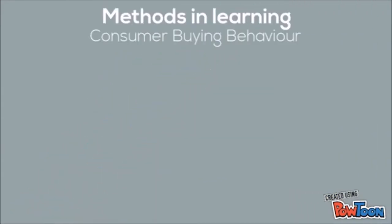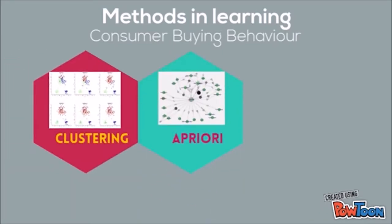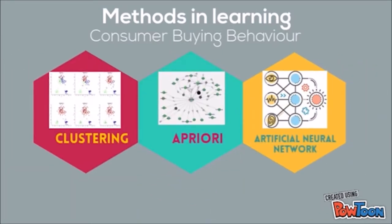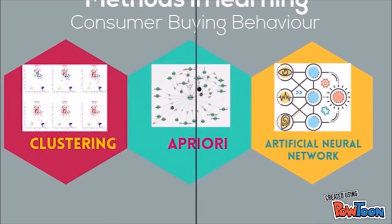So how can we actually utilize this data to learn about consumer buying behavior? From the many available methods, three that are able to learn about consumer buying behavior include clustering, A-priori, and artificial neural networks. These methods use data mining techniques to generate information based on the available data.